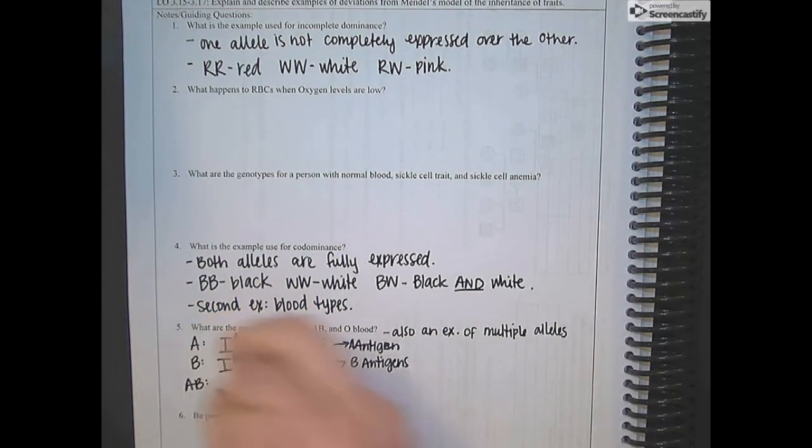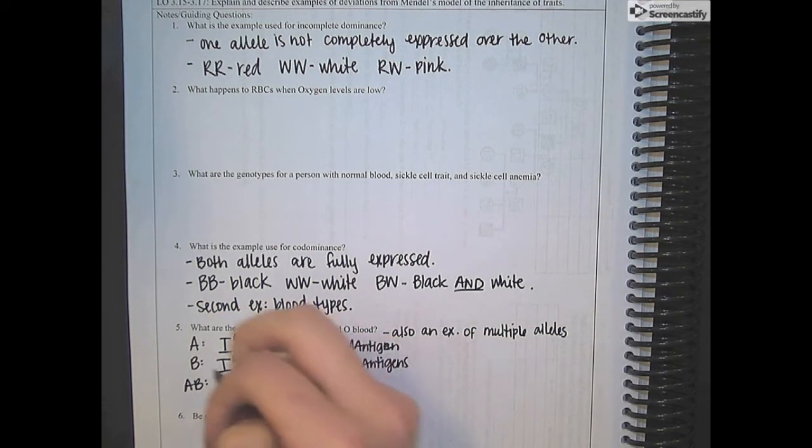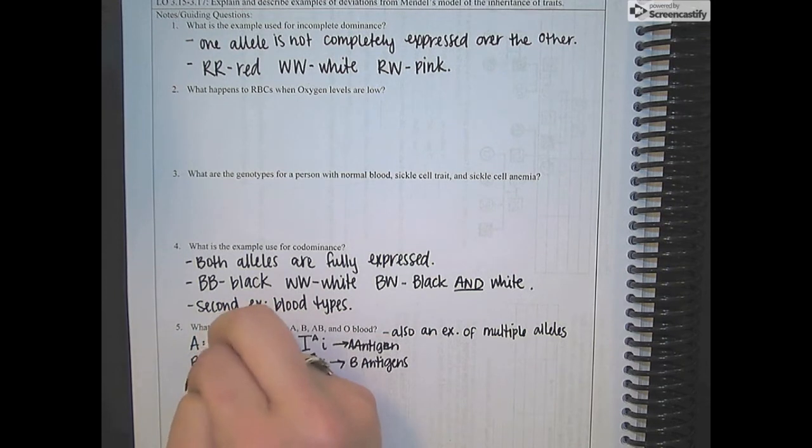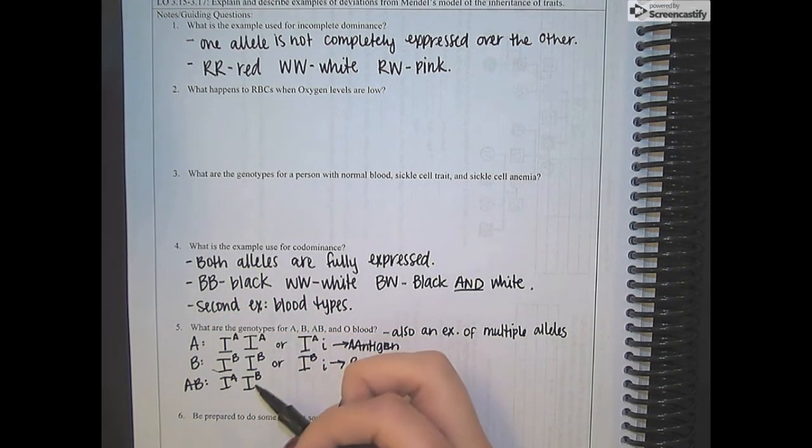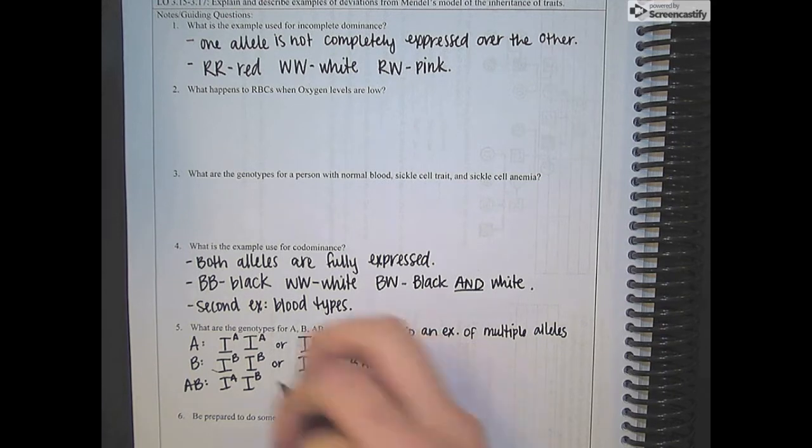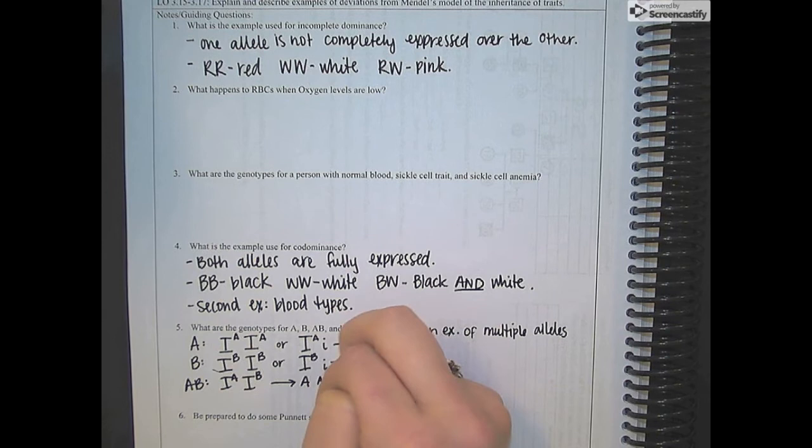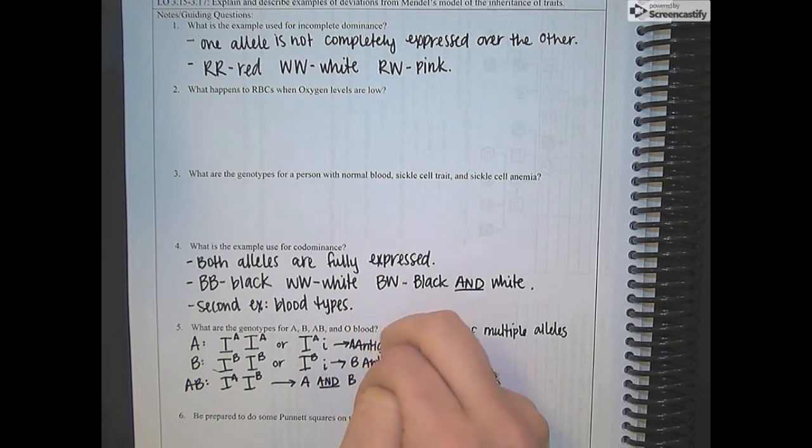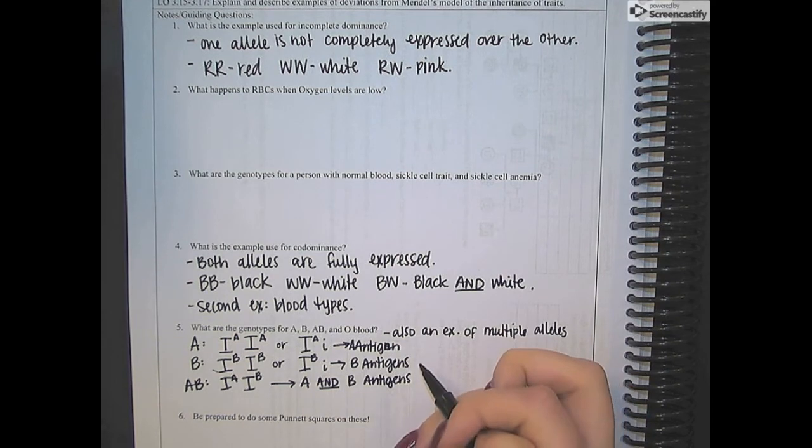For AB blood, it's codominant. So we are going to have one IA and one IB. So it's going to express both the A antigen and the B antigen on the surface. So this one has A and B antigens because it's codominant. They're both expressed.